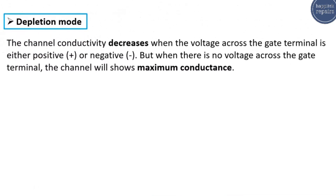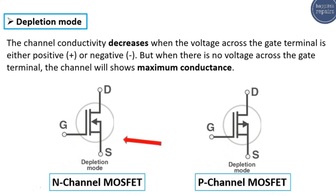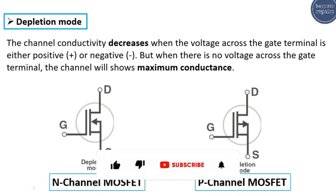In depletion mode, the channel conductivity decreases when the voltage across the gate terminal is either positive or negative, but when there is no voltage across the gate terminal, the channel shows maximum conductivity. As you can see in this circuit diagram, this is the n-channel MOSFET and here is the p-channel MOSFET. The MOSFETs contain three terminals: drain, gate, and source. For the n-channel MOSFET, the arrow points toward the gate from source to gate, but for the p-channel MOSFET, the arrow goes from gate to source — you can use this arrow to differentiate between them.